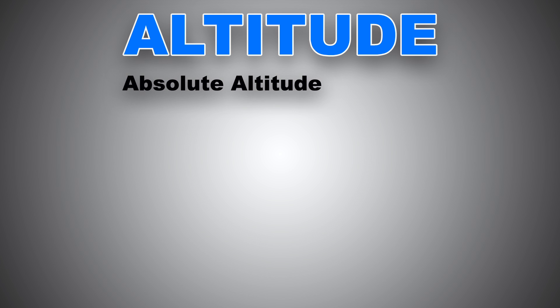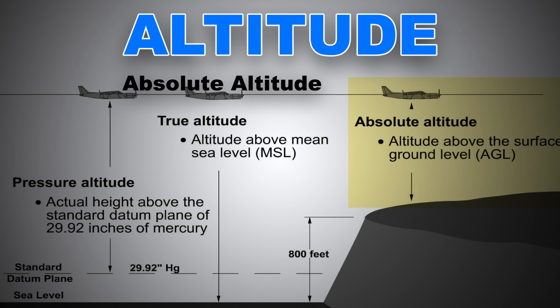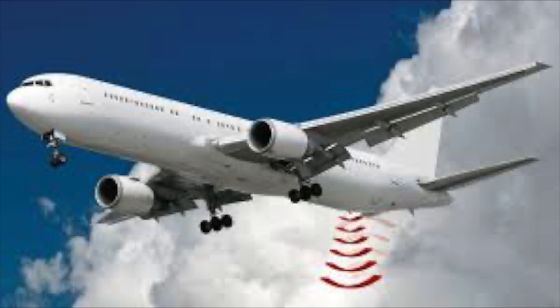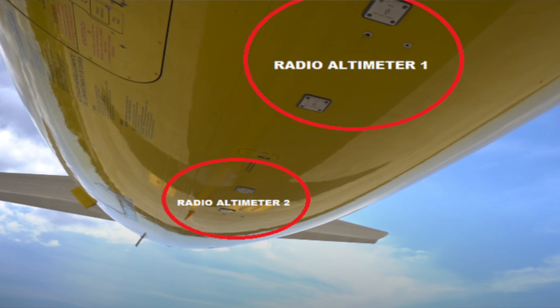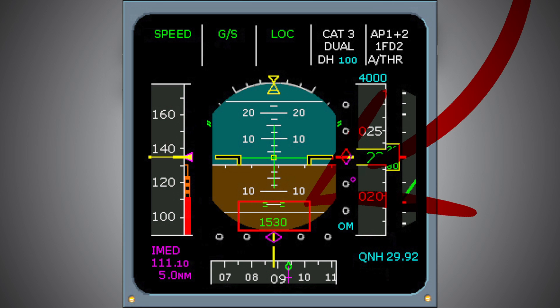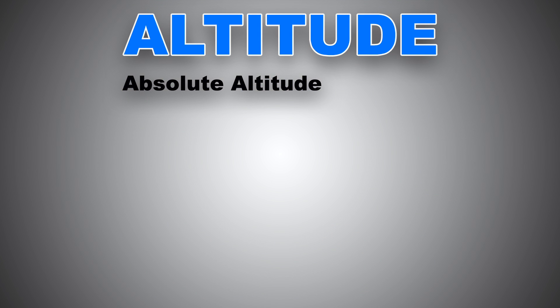Next, absolute altitude. Absolute altitude is constantly changing. It is the distance measurement of your airplane above the ground, expressed in feet AGL. You can also find many obstacles and airspace classifications that exist in feet above the ground. For example, a radar altimeter or radio altimeter measures the altitude above the terrain presently beneath an aircraft by timing how long it takes a beam of radio waves to reflect from the ground and return to the plane. Radar altimeters generally give readings up to 2,500 feet AGL.